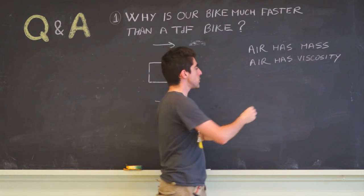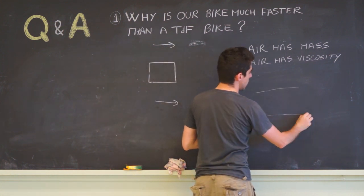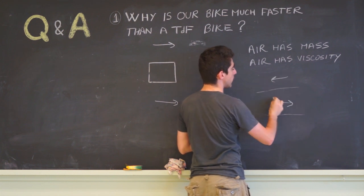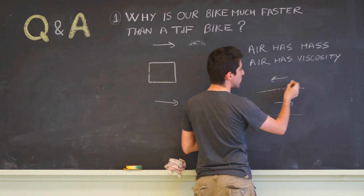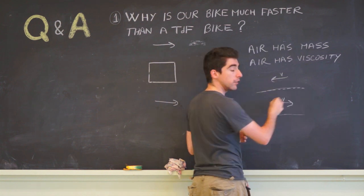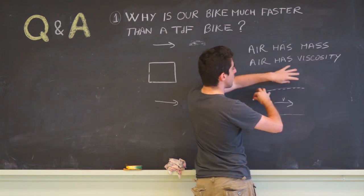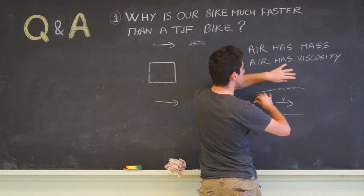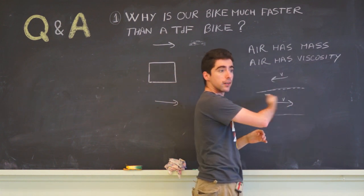And air has viscosity, which means that if we have some air moving in one direction and some air moving in the other direction, there will be a friction force here proportional to the velocity, and the two sides will gradually slow down unless something keeps them moving.